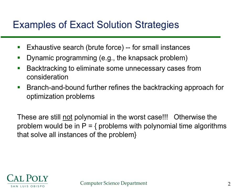Some of the exact solution strategies that we have are exhaustive search. We can use dynamic programming — sometimes for many instances of the knapsack problem that will run efficiently. Backtracking, which we're going to talk about in a lot of detail, and Branch and Bound, which is a refinement of backtracking that adds an extra way of trimming down how many different possible solutions we have to look through. None of these are polynomial time in the worst case; otherwise the problem would be in NP and we'd have a polynomial time algorithm for it.